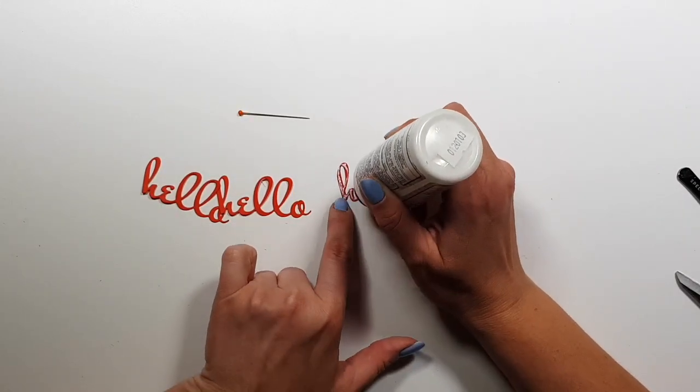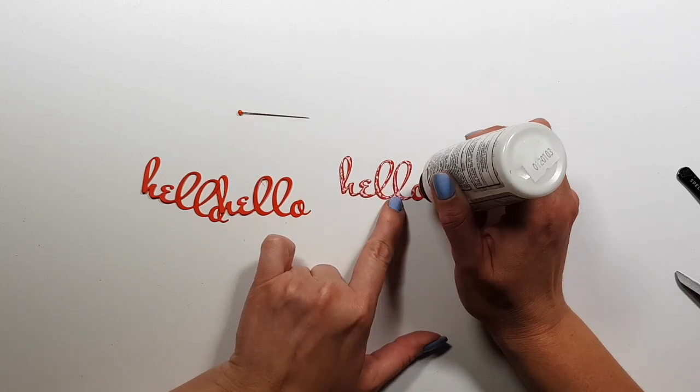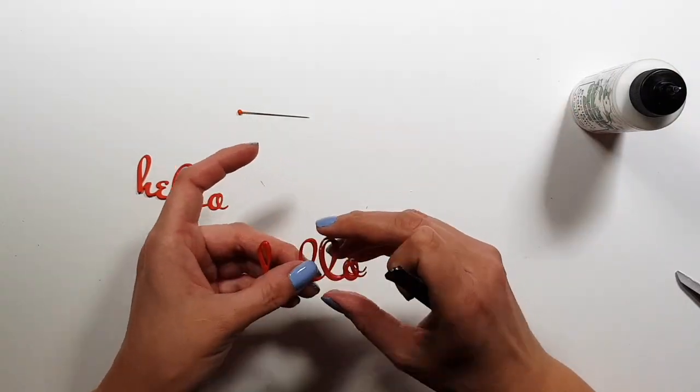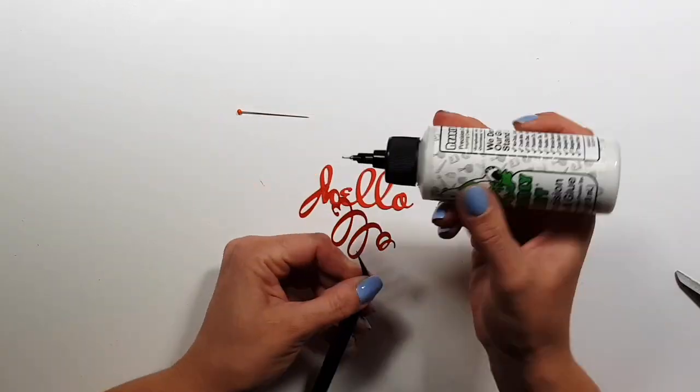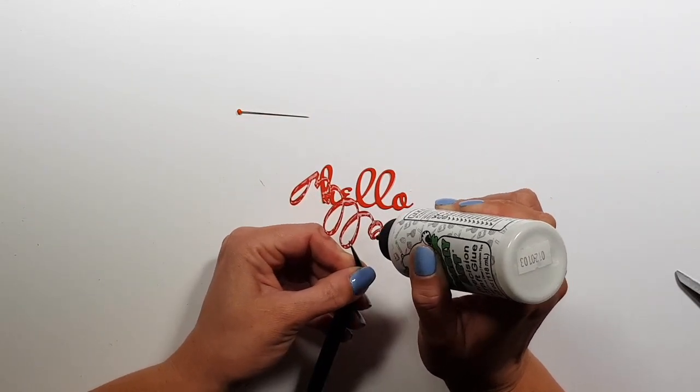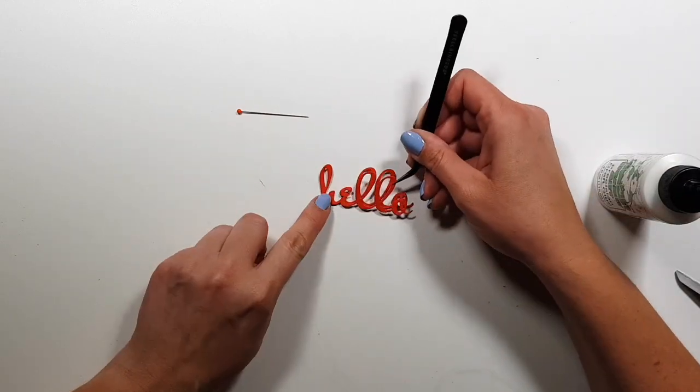Of course you can use double-sided tape and die cut it with it if that's your preference. And I'm doing the same with the sentiment, which I die cut from red.